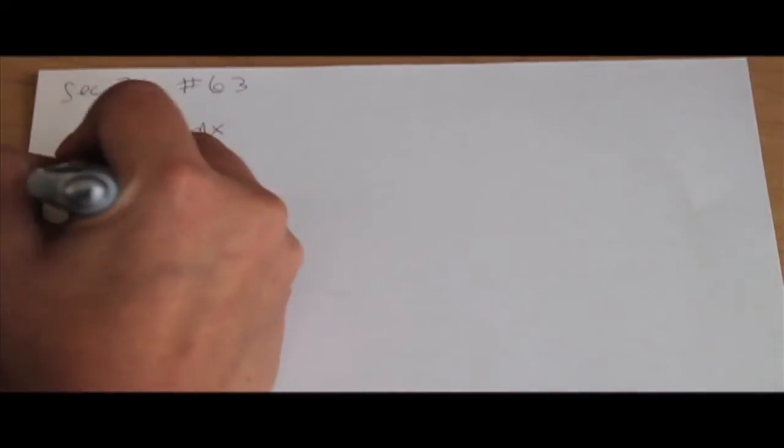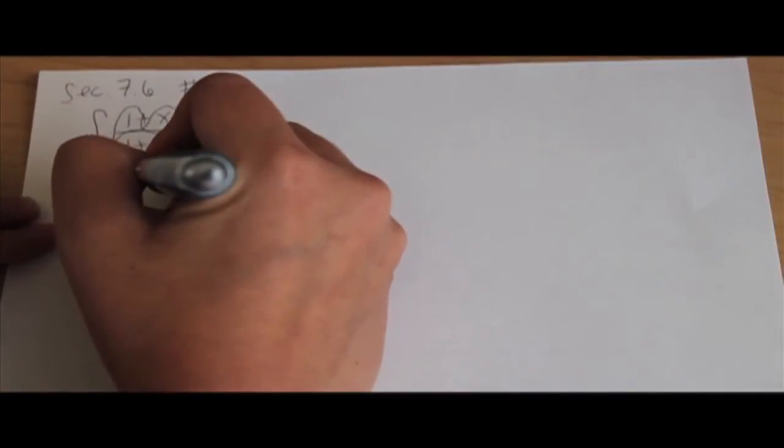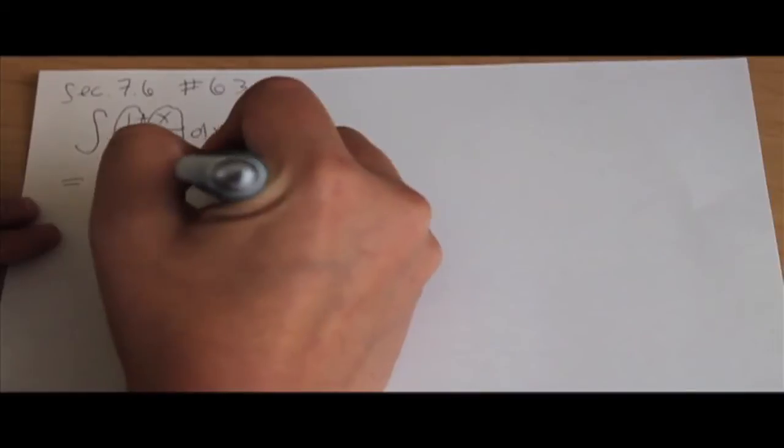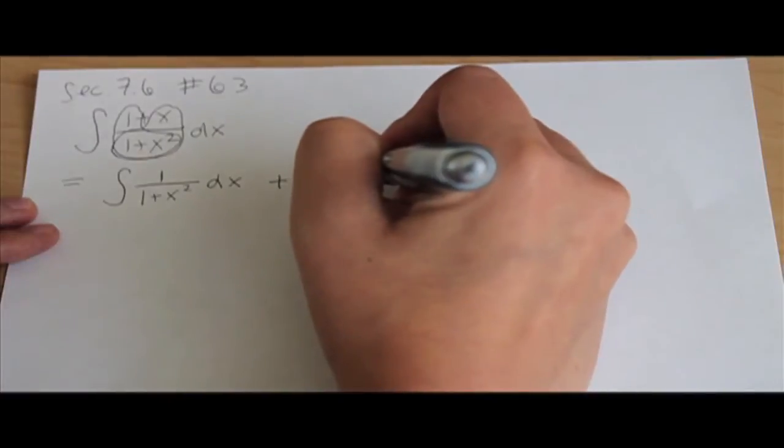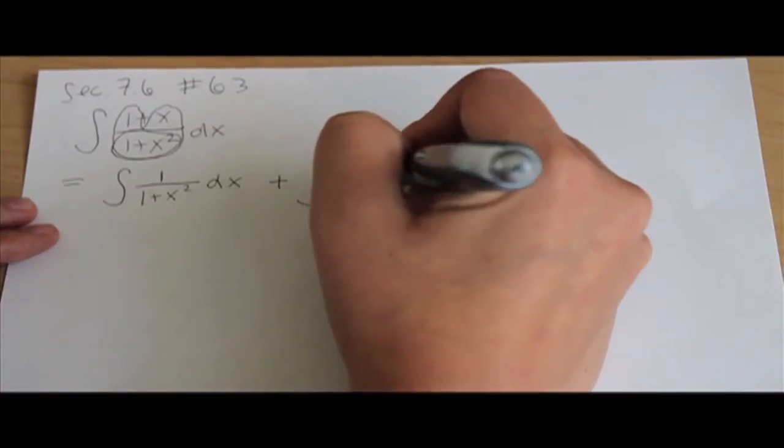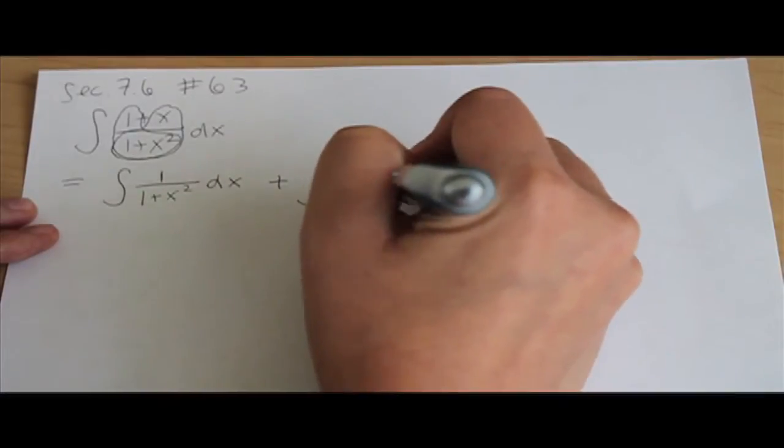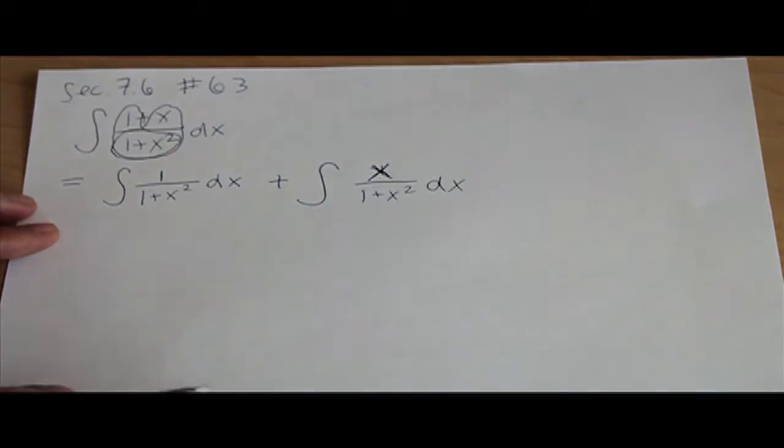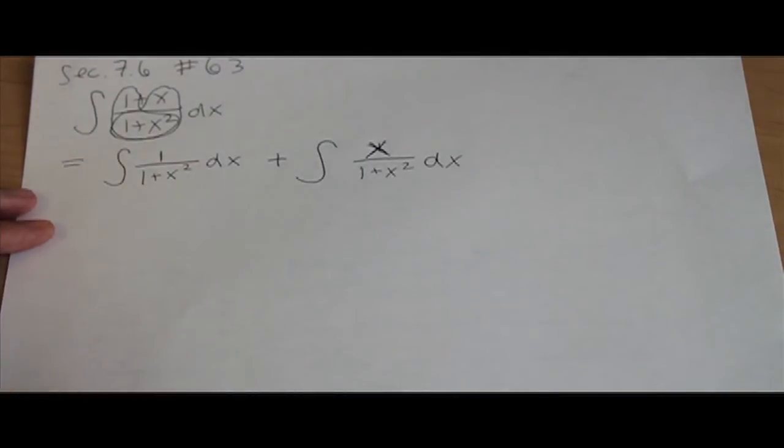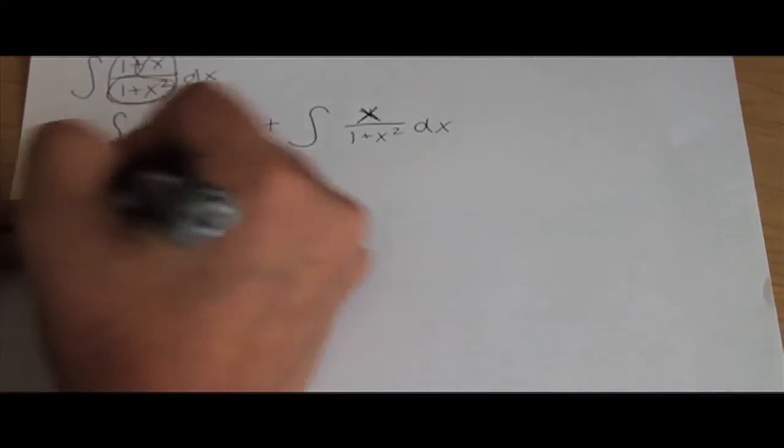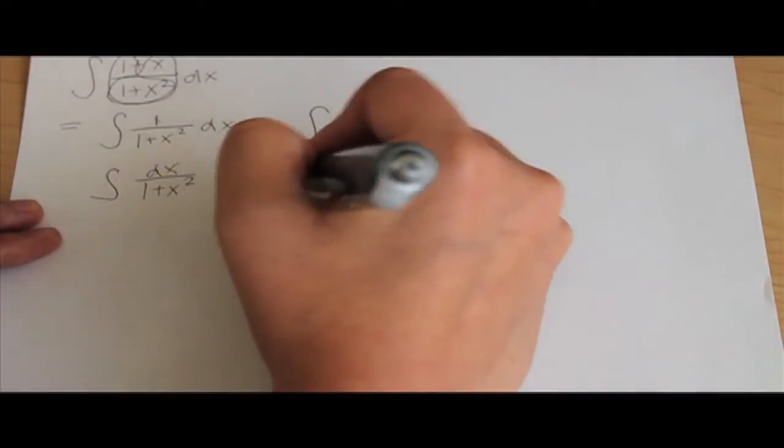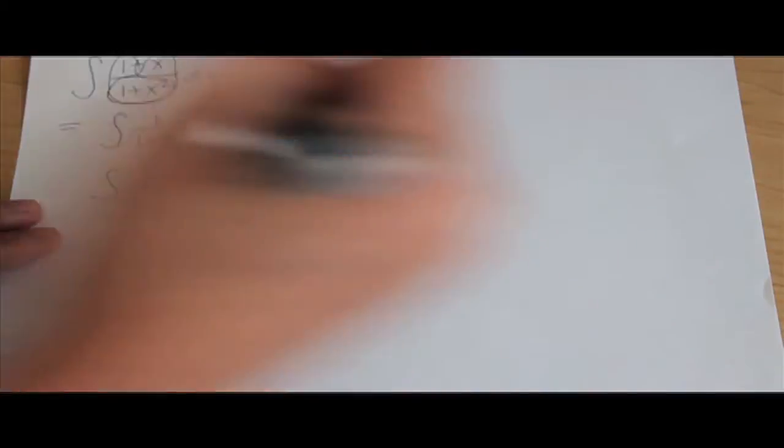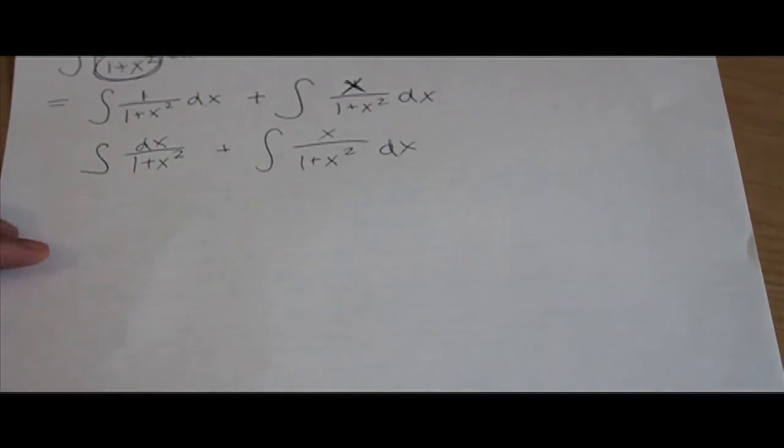So our new integral is going to look like 1 over 1 plus x squared dx plus our second part which is x over 1 plus x squared dx. I'm just going to simplify this up a little bit for you guys by multiplying the dx over onto the top of the first integral and then just leave the second integral the same. That's your simplified integral to start working on this problem.